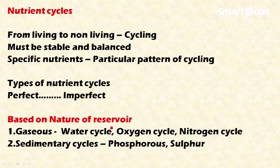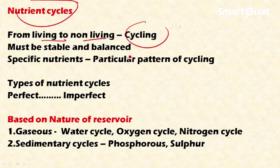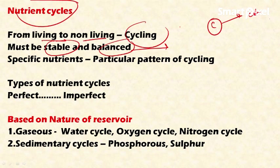Nutrient cycles move from living to non-living things — from biotic to abiotic components — through cycling, and this cycling must be stable and balanced to sustain life. For example, because of instability in the carbon cycle, we are witnessing climate change, global warming, and other harmful effects on the ecosystem.